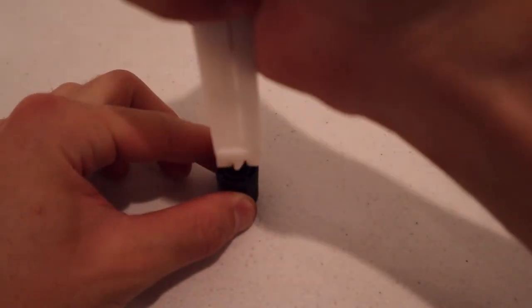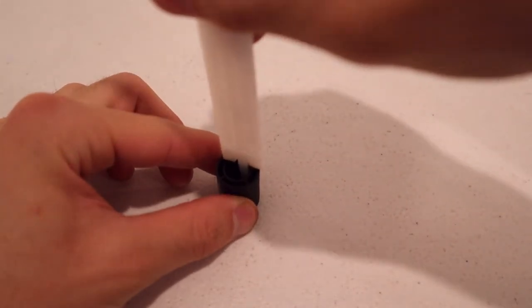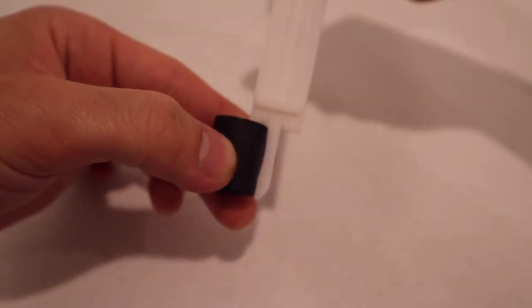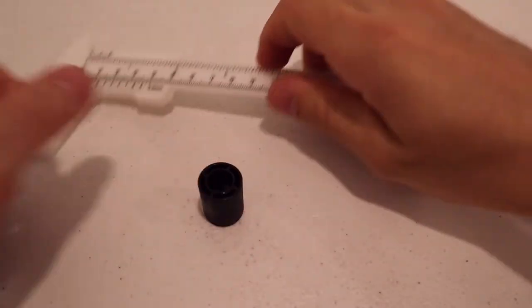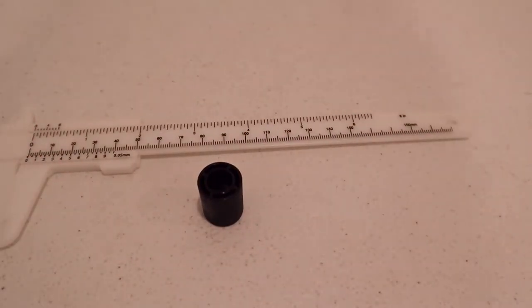A caliper can also measure depth by placing the butt of the tool on an edge and then lowering the sliding bar to the bottom of the desired measuring area. This is very useful for determining the depth of holes.